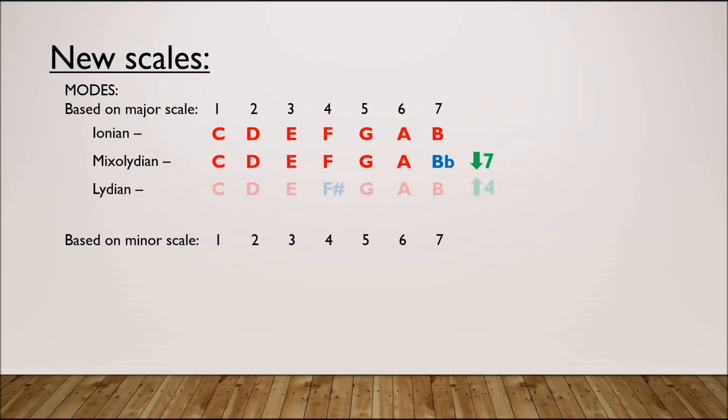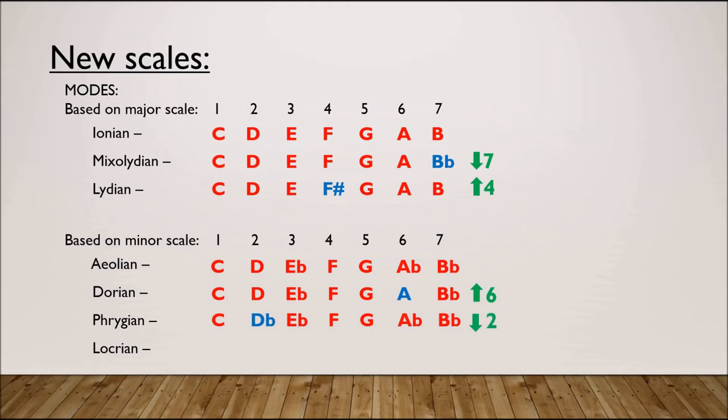But there's more. There are four modes that can be thought of as variations of the minor scale. Aeolian has the same notes as a minor scale. Dorian has a raised sixth scale degree. Phrygian has a lowered second scale degree. And Locrian has a lowered second and fifth scale degree.